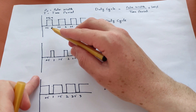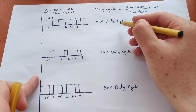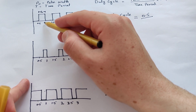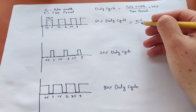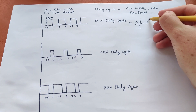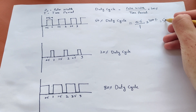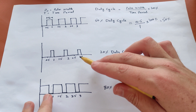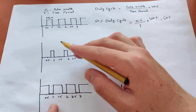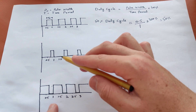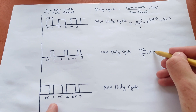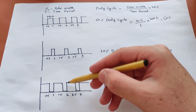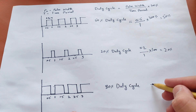To calculate: the pulse width is 1 minus 0.5, so pulse width is 0.5 seconds. Divided by time period of one second, multiplied by 100% gives us 50%. For the second signal, the pulse width is 0.2 seconds and the time period is one second, so the duty cycle is 20%. For the third signal, the pulse width is 0.8 seconds and the time period is one second, so the duty cycle is 80%.